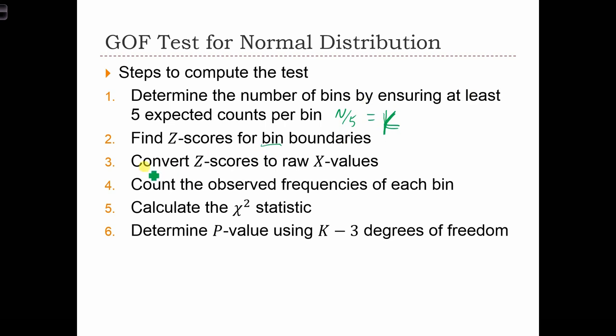Once we know our z-score boundaries, we're going to convert them back into the raw x-values. You're then going to take the raw x-values, those cutoffs, and count the observed frequencies from our actual sample of x's in each of the bins.